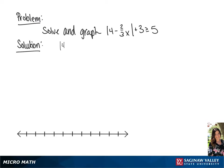We have the absolute value of 4 minus 2 thirds x plus 3 is greater than or equal to 5. Since we want the absolute value portion on the left side, we're going to start by subtracting 3 from both sides of the inequality, giving us the absolute value of 4 minus 2 thirds x is greater than or equal to 2.